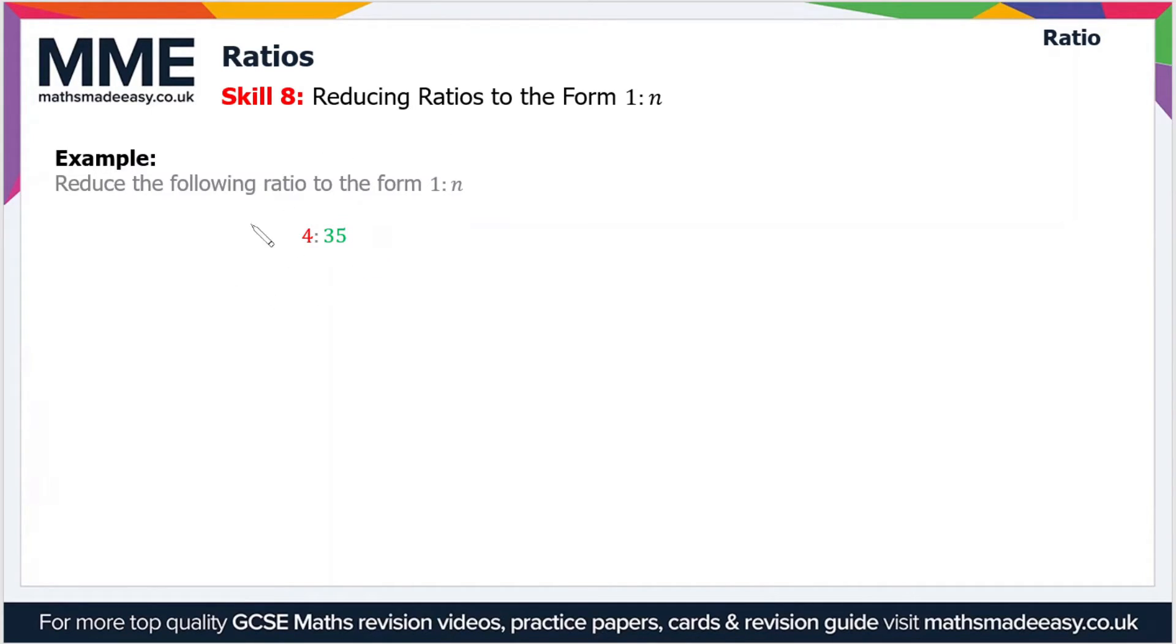All we have to do is divide the ratio by the smallest of the parts. In this case, that is 4. So if we divide both sides by 4, we get the ratio 1:35/4,